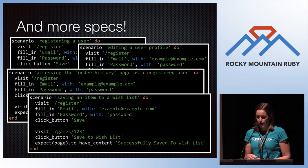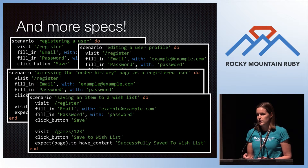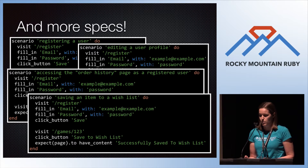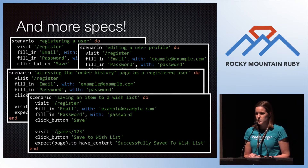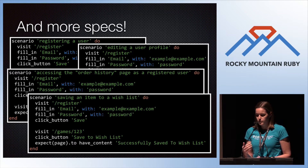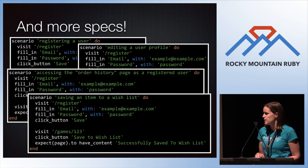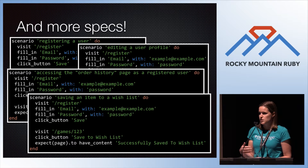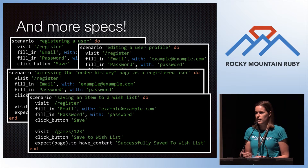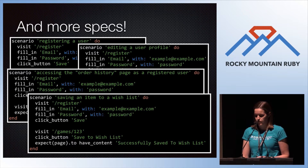The problems here are that these tests are not DRY. If you have a UI change or a refactoring, you're going to have to change all four of these tests instead of just changing it in one place. It's difficult to read and it obscures the purpose of the test. When you look at the wish list test, you see all this registration stuff at the top and have to figure out that we need a registered user — and then the actual meat of the test is at the bottom.